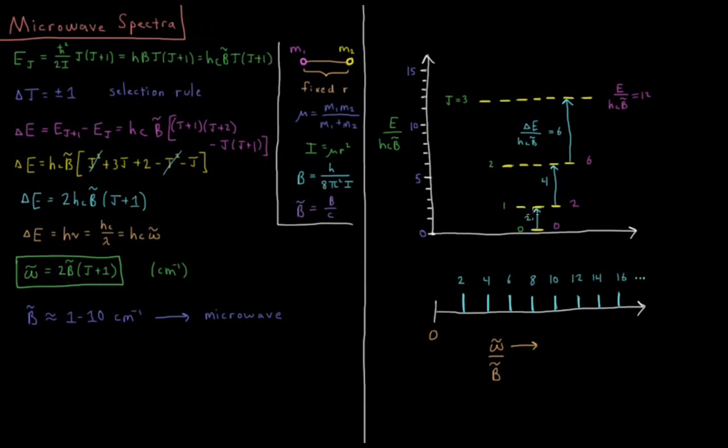From j equals 1 to j equals 2, it's 4 b bar. j equals 2 to j equals 3, 6 b bar, and the pattern continues on from there.